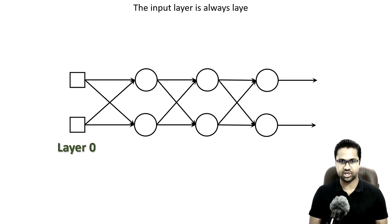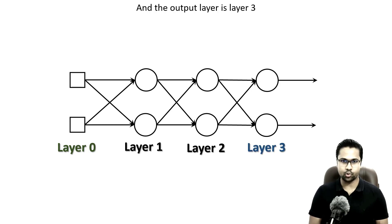We can get rid of this confusion simply by marking the layer sequentially. The input layer is always layer 0. The first hidden layer is layer 1. The second hidden layer is layer 2. And the output layer is layer 3. With the layer indicator, now there is no chance of any confusion.